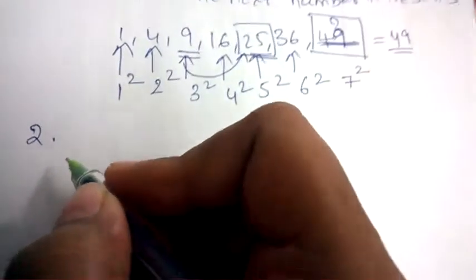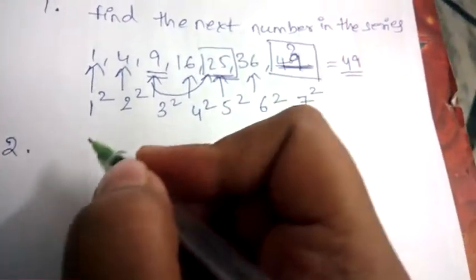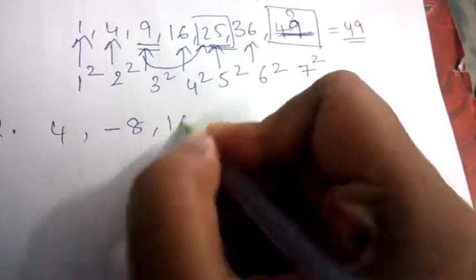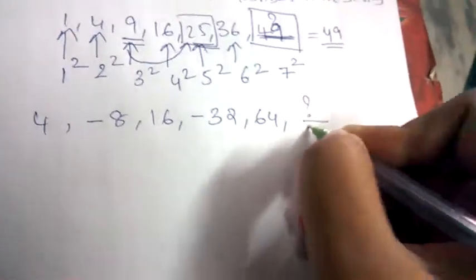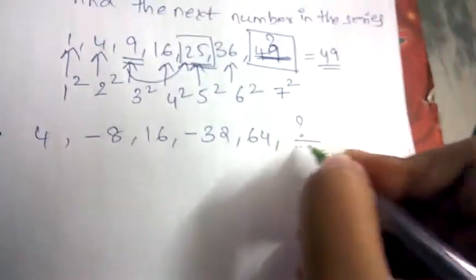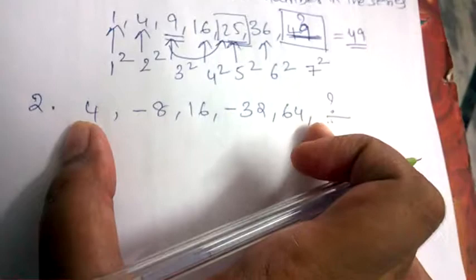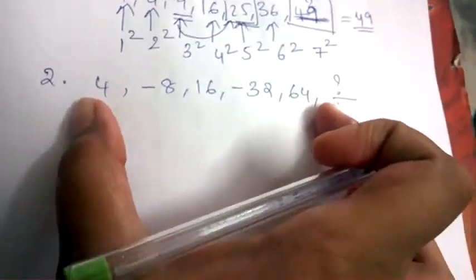Let's see another example: 4, -8, 16, -32, 64, question mark. We need to find which number comes in this position. Let's analyze how these numbers appeared.